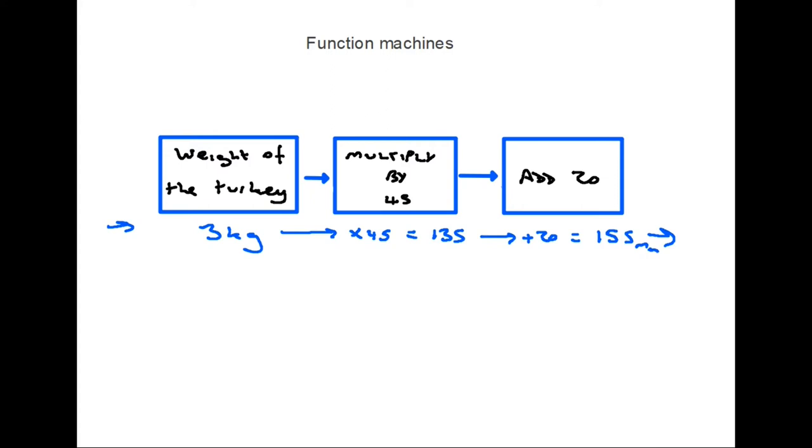So all you are doing with a function machine is putting something in the beginning. In this case, the weight of the turkey. You work from box to box. You follow the instructions. And out at the end comes your answer, which again in this case is 155 minutes.